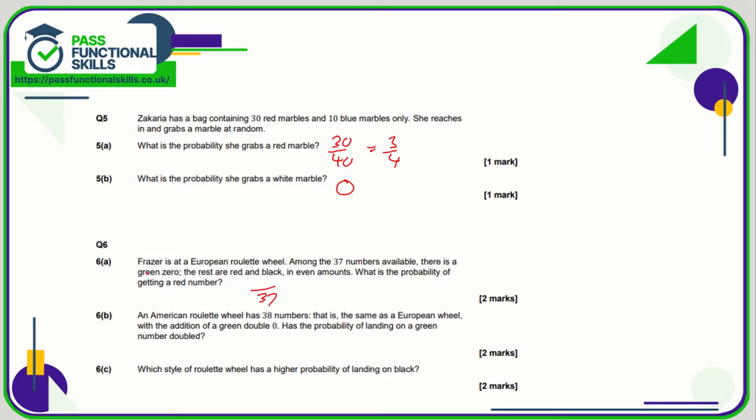If we get rid of the green zero, that means there's 36 numbers left and they are split evenly red and black. So 36 divided by 2 is 18. So the probability of getting a red number is 18 out of 37.